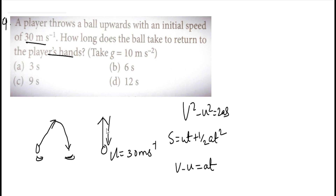Acceleration due to gravity acts on the ball. At one particular point — the highest point — the ball stops moving. At the highest point, the final velocity becomes zero. If we throw the ball upward, the velocity at the highest point reaches zero.